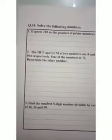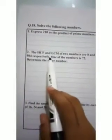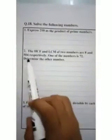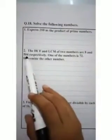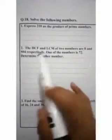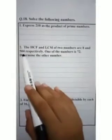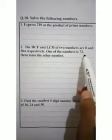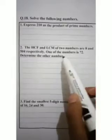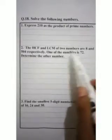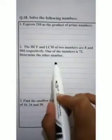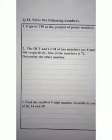The second part states: the HCF and LCM of two numbers are 8 and 504. So HCF is 8 and LCM is 504. One of the numbers is 72. We have to determine the other number.